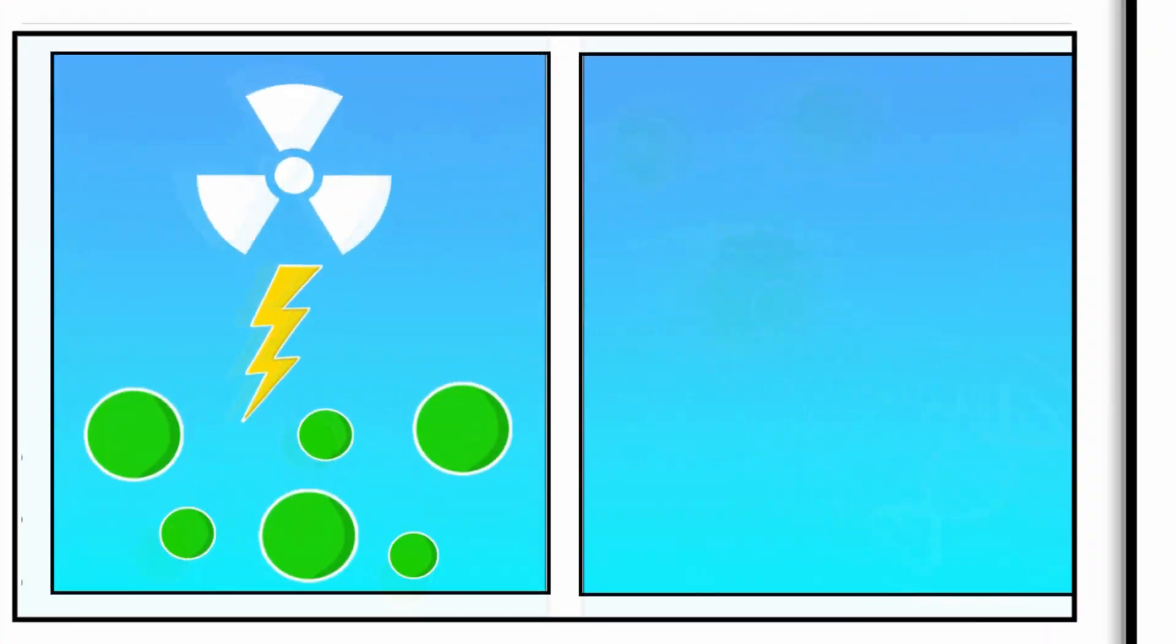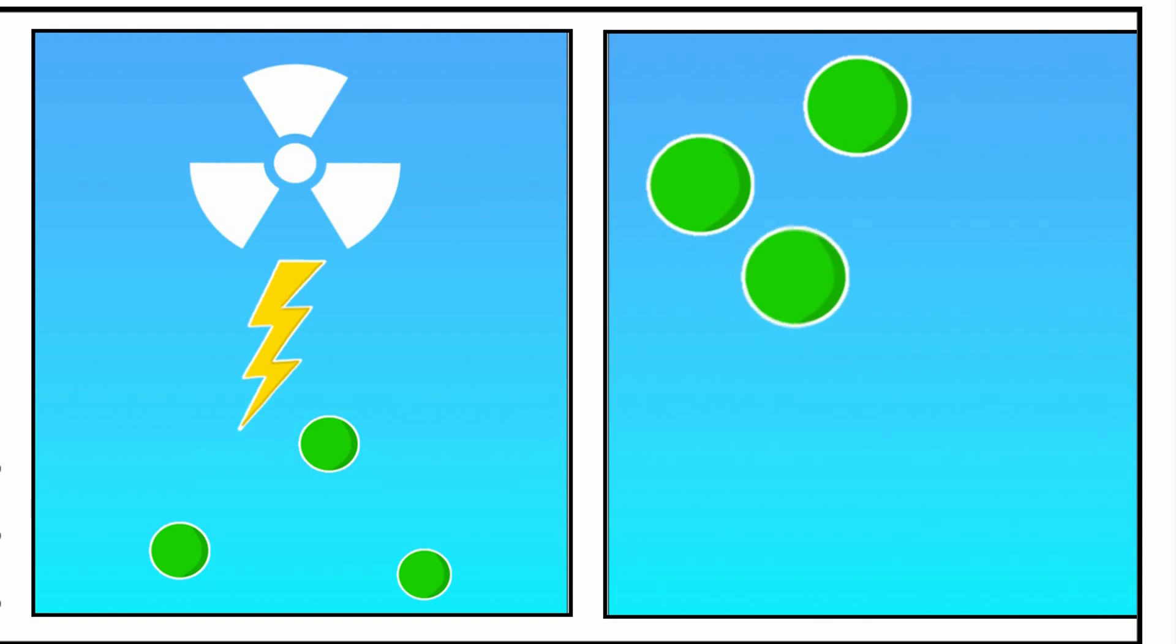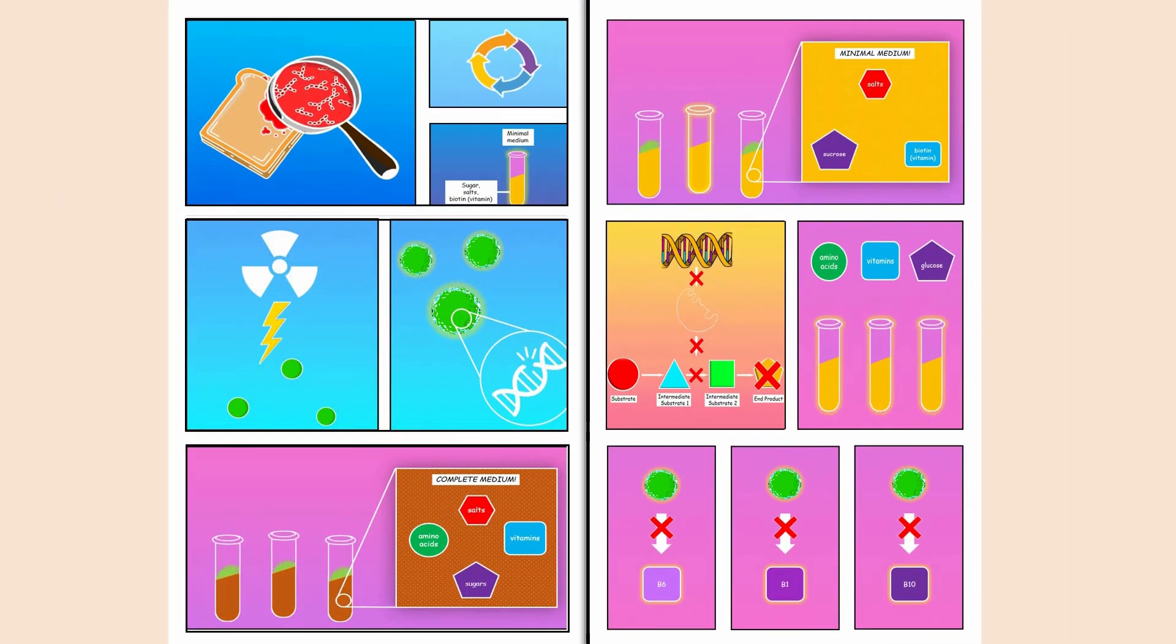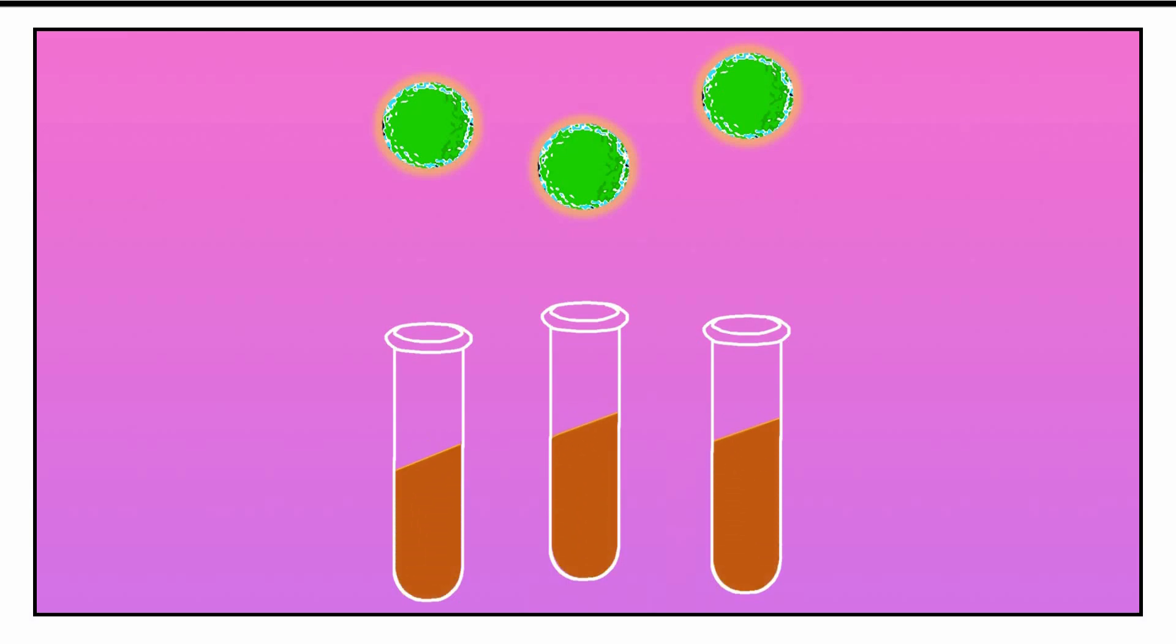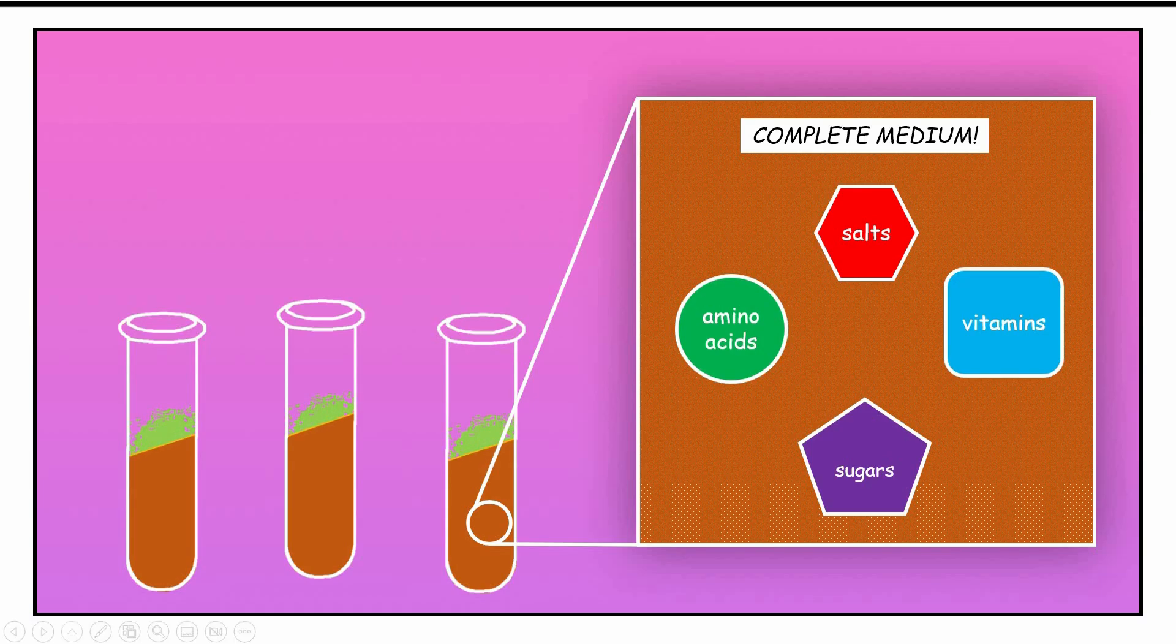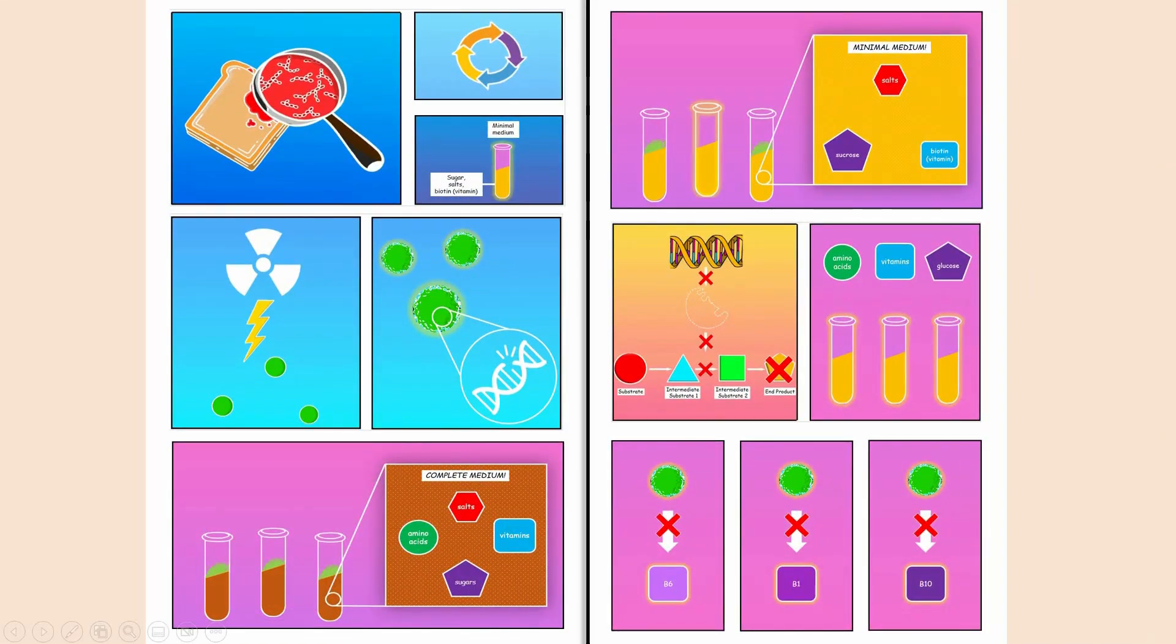Beadle and Tatum used X-rays to cause mutations in the genes of Neurospora spores, and then transferred these irradiated spores to the complete medium. This medium had many products that the spores could normally make themselves for their survival, and so the mutants grew.